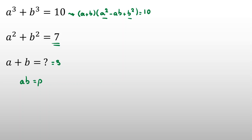a² + b² equals 7. We have a + b which is s. Since a² + b² equals 7 and ab is product p, the first equation becomes s times (7 - p) equals 10.